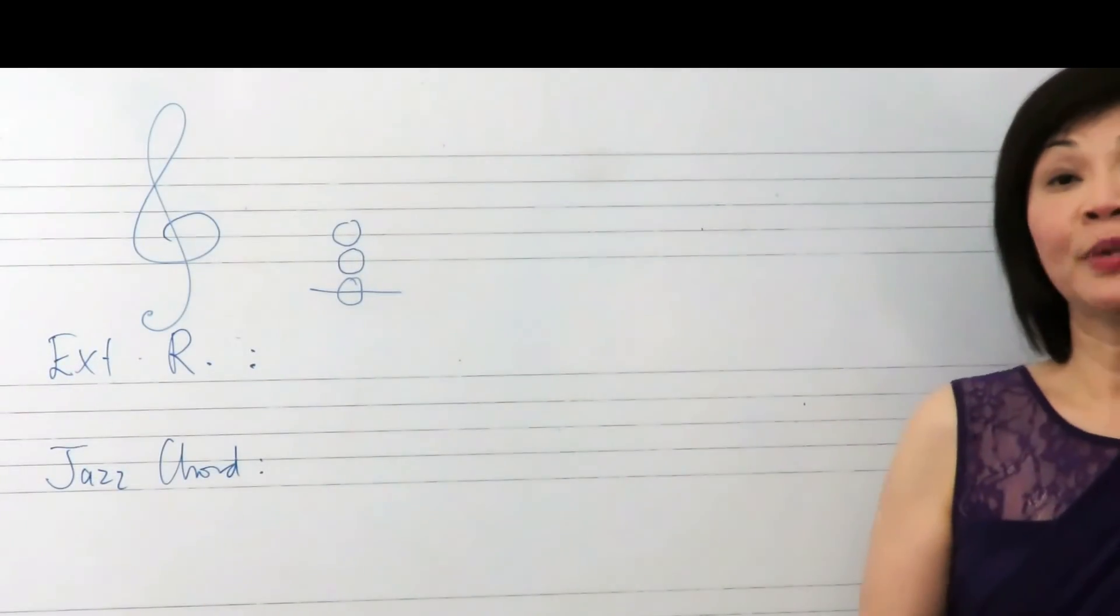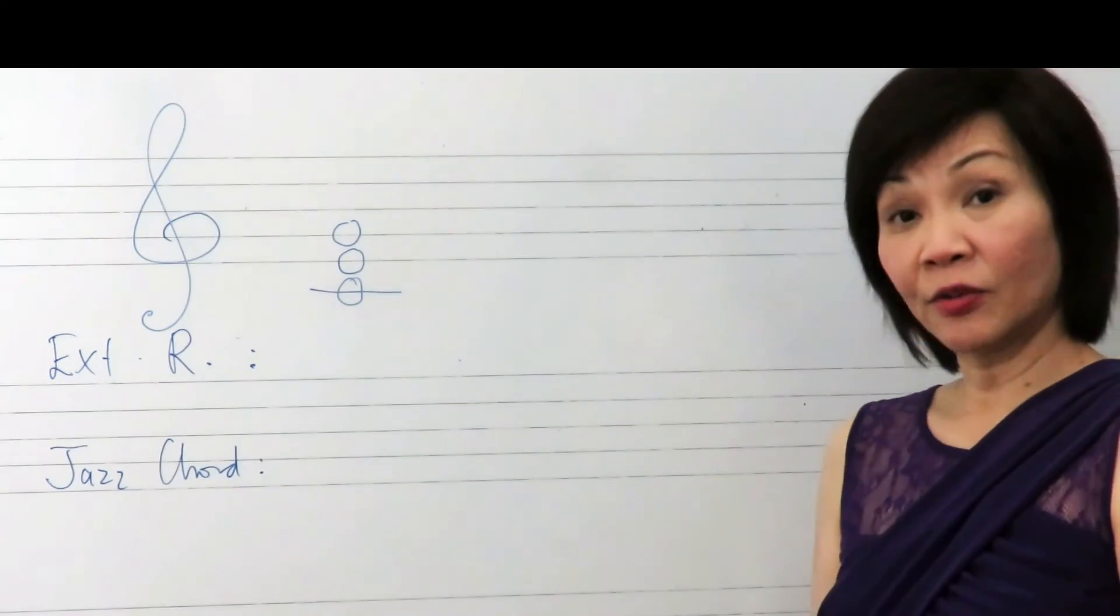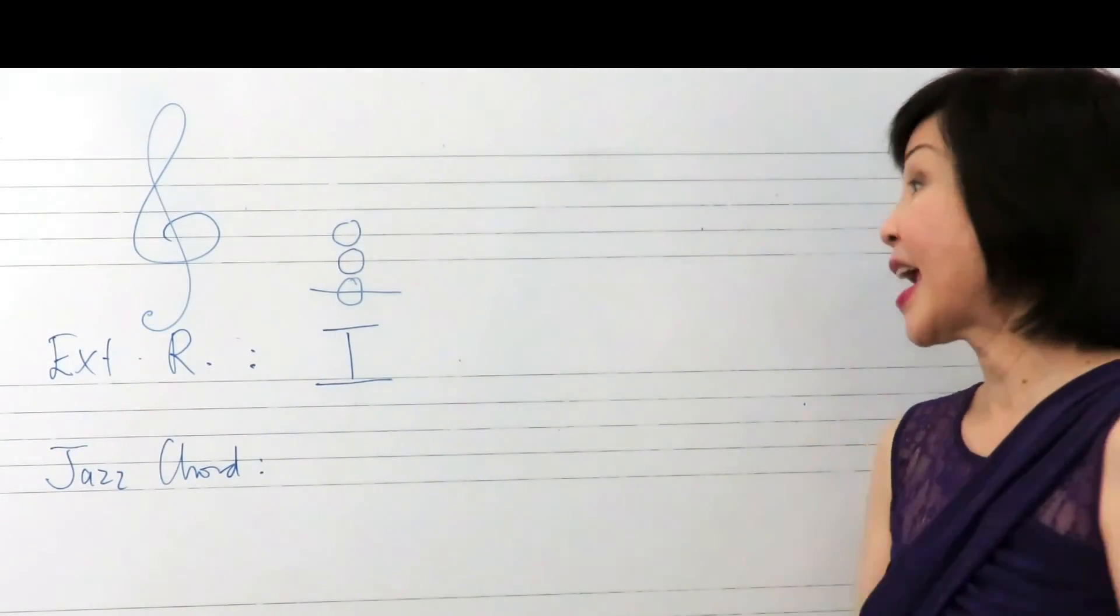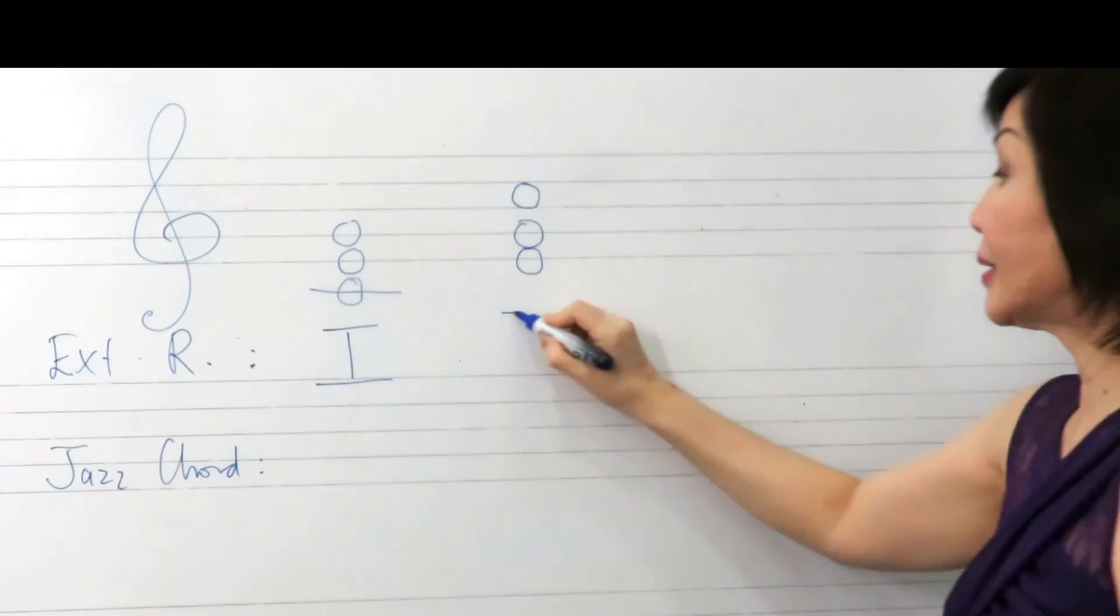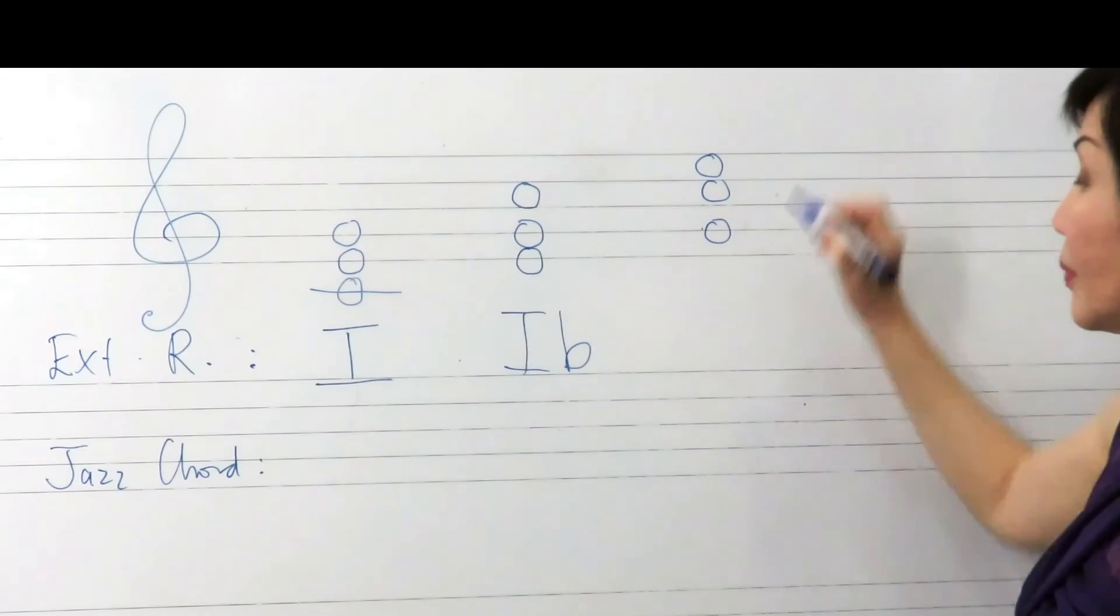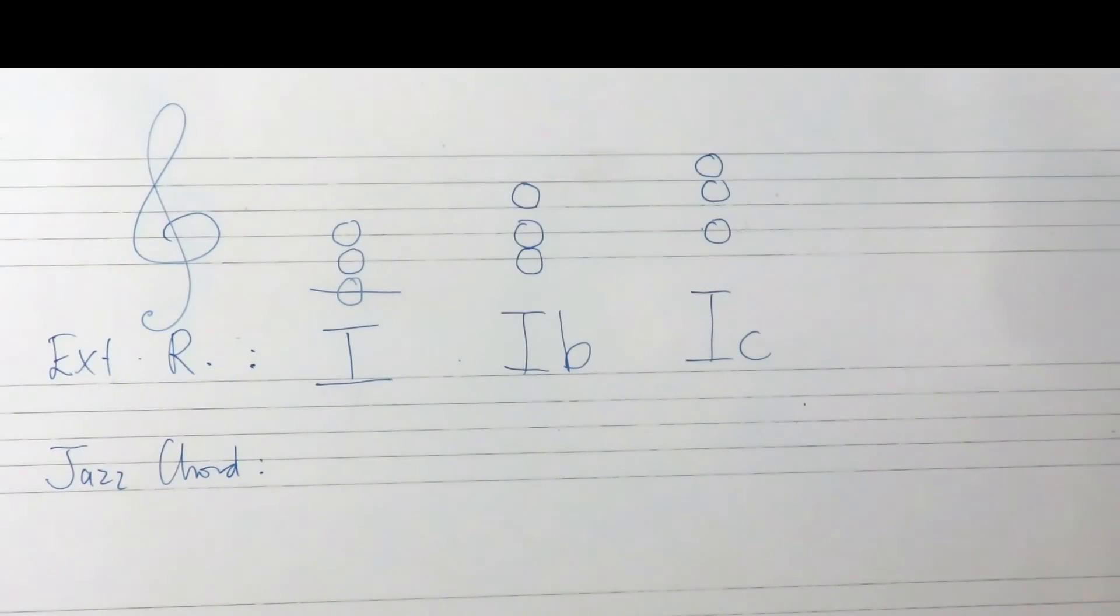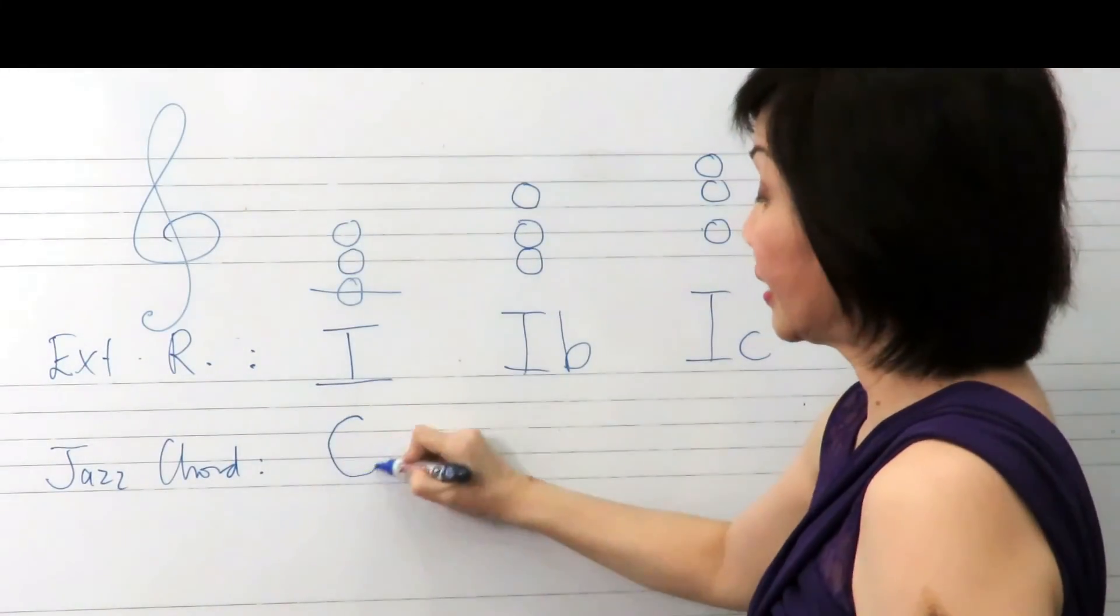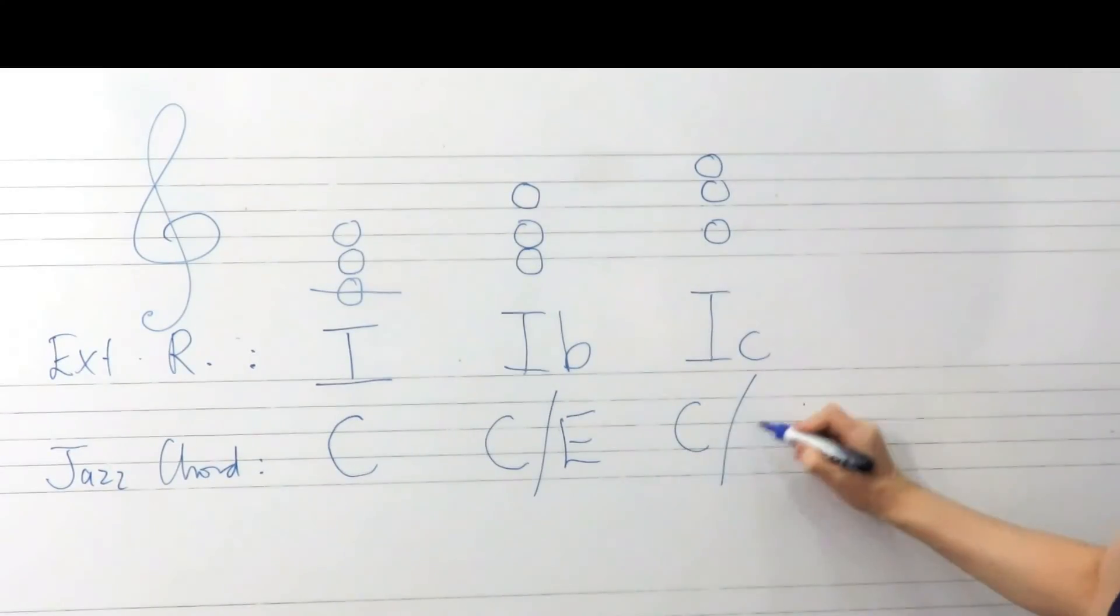For a triad or chord to be notated fully, it is important to indicate its position or inversion. Thus, for C major chord, the tonic triad, we will just write the Roman numeral as it is. For the first inversion, the chord can be written as IB. And in the second inversion, it is written as IC. The changes in the inversion can be noticed with the different bass notes. In jazz chord notation, we would write this as a C major chord, C major with an E bass, and C major with a G in the bass.